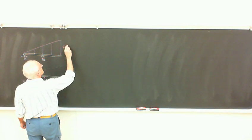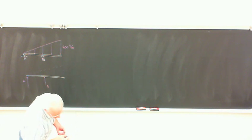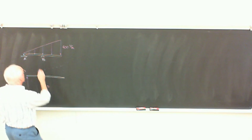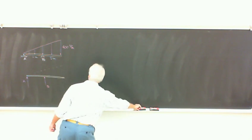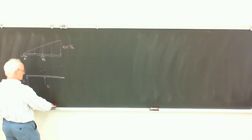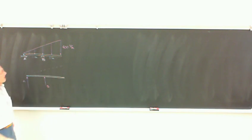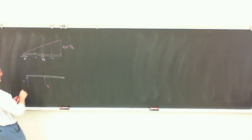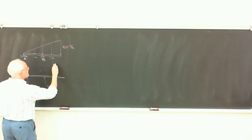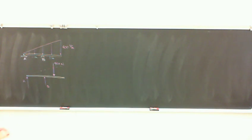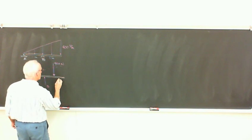What was the uniform distributed load? It was 400 newtons. And the whole span was two meters. So we replaced the distributed load with a concentrated load of one-half times 400 times two, which is 400 newtons. And one-third of the way from the fat end - actually two-thirds of a meter from the fat end.